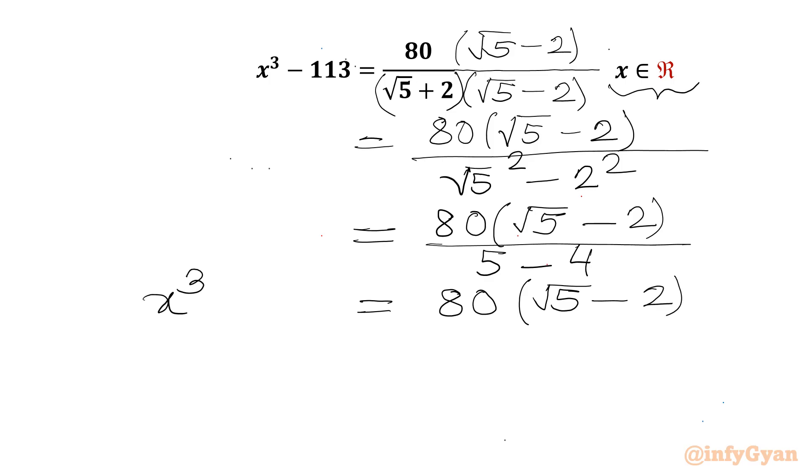RHS is 80 times root 5 minus 2. LHS was x cube minus 113. Now I can write x cube minus 113 equal to 80 square root 5 minus 160. Or we can write x cube will be equal to 80 square root 5 minus 160 plus 113 minus 47.